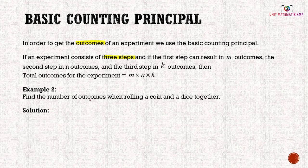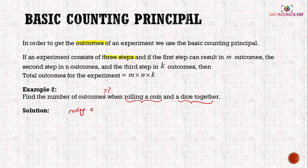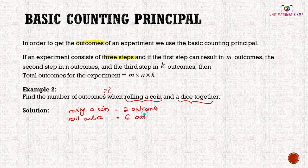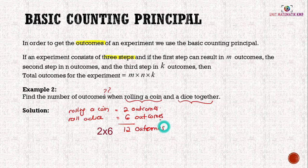Find the number of outcomes when rolling a coin and a dice together. When we roll a coin, we have 2 outcomes: either head or tail. When we roll a dice, we have 6 outcomes, from numbers 1 to 6. So the total outcomes is 2 × 6 = 12 outcomes when you roll a coin and a dice together.